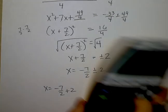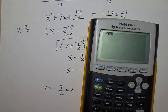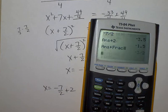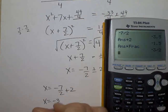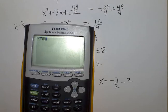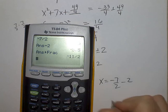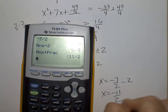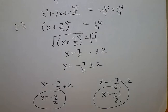So feel free to use a calculator, negative 7 halves plus 2, putting it back into a fraction or leaving it as a decimal, your choice. And the other one will be negative 7 halves minus 2. Again, leave it as a decimal or putting it back into a fraction, your choice.